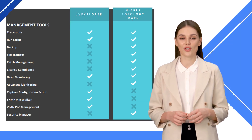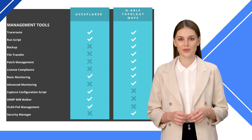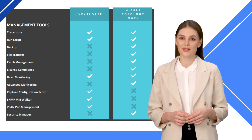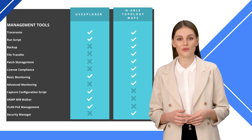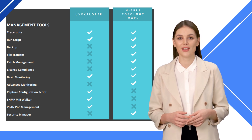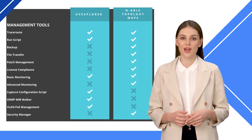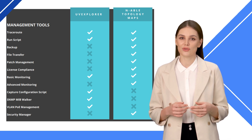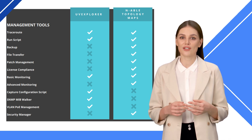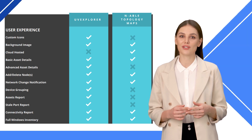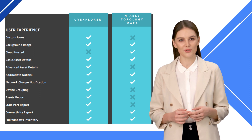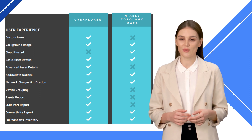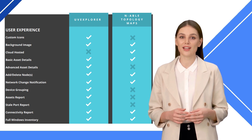N-ABLE stands out in offering a host of additional features like file transfer, backup, patch management, license compliance, security manager, and advanced monitoring. UV Explorer does not include those features but does include network troubleshooting tools like Traceroute, MIB walkers, and more. The user experience is equal between both products, but UV Explorer will capture more asset information, and reports of this information can be exported easily.